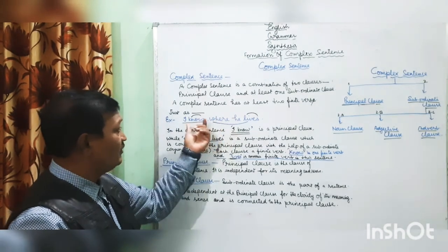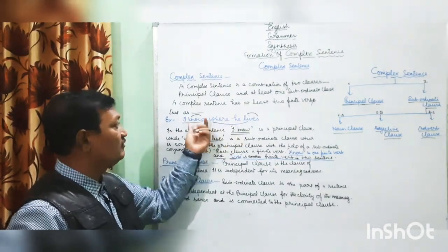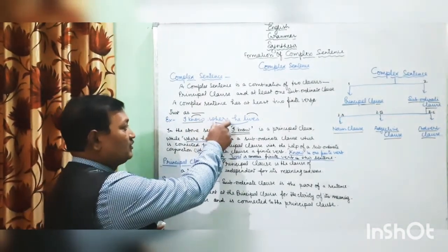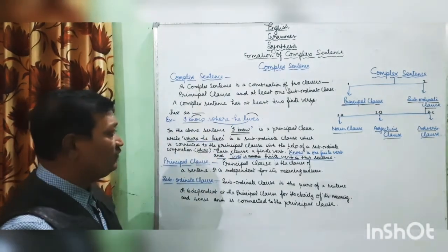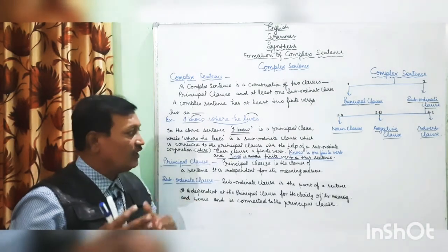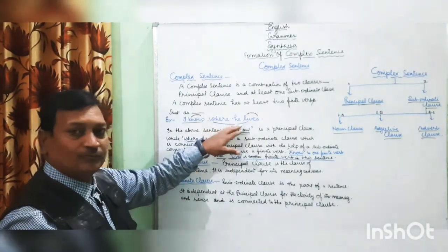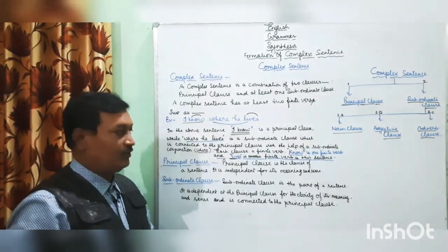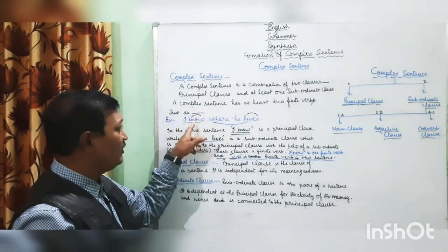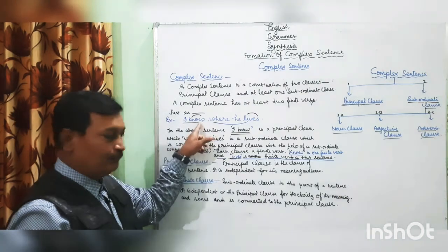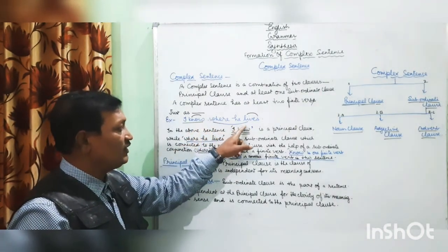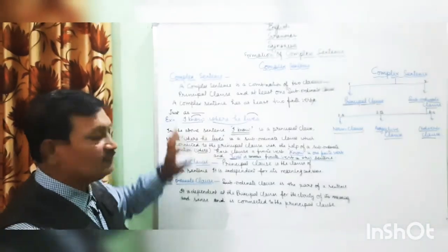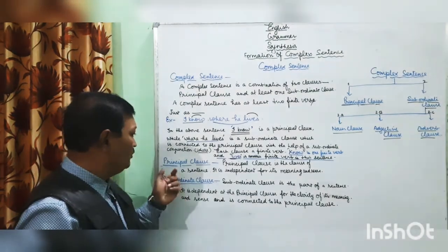The subordinate clause is connected to the principal clause with the help of a subordinate conjunction — 'where'. Each clause has a finite verb. The principal clause has the finite verb 'know', and the subordinate clause has the finite verb 'lives'. So in this sentence you can see there are two finite verbs.